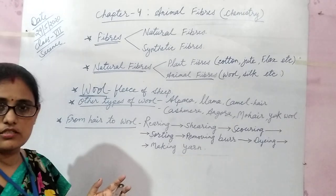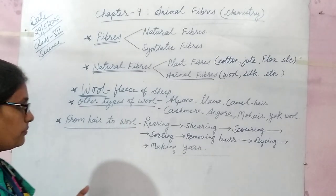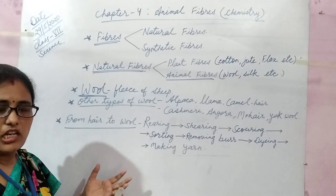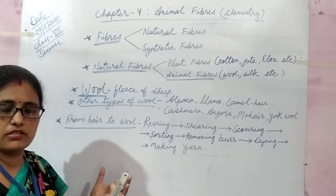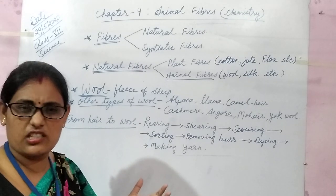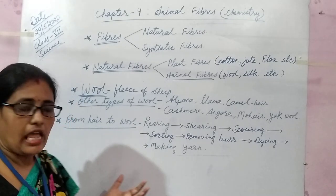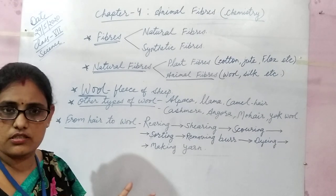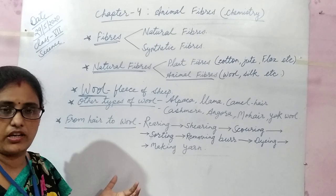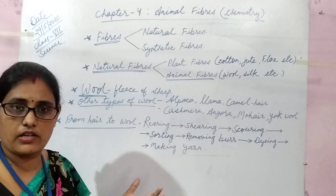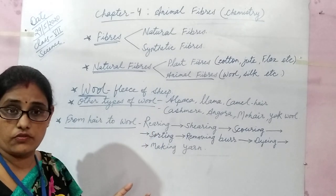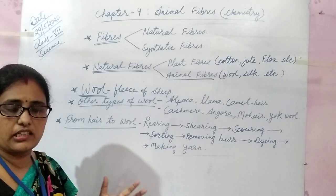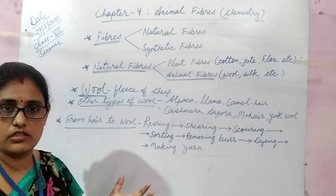There are certain steps for obtaining wool from sheep. Number one is rearing. Rearing is the process in which sheep are reared in certain places where the terrain is very low. They are kept in proper places and fed on a mixture of pulses, grasses, dried leaves, grains, corn, etc. Their lifespan is 10 to 12 years. In winter season, they are kept indoors to protect them from the harsh winter.